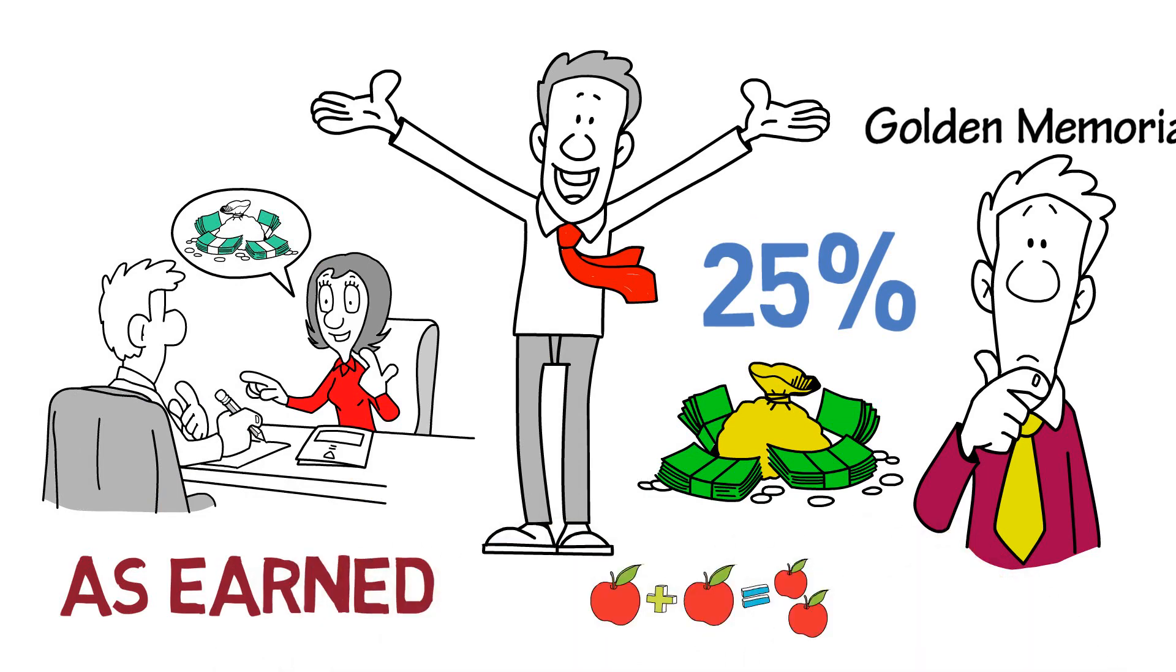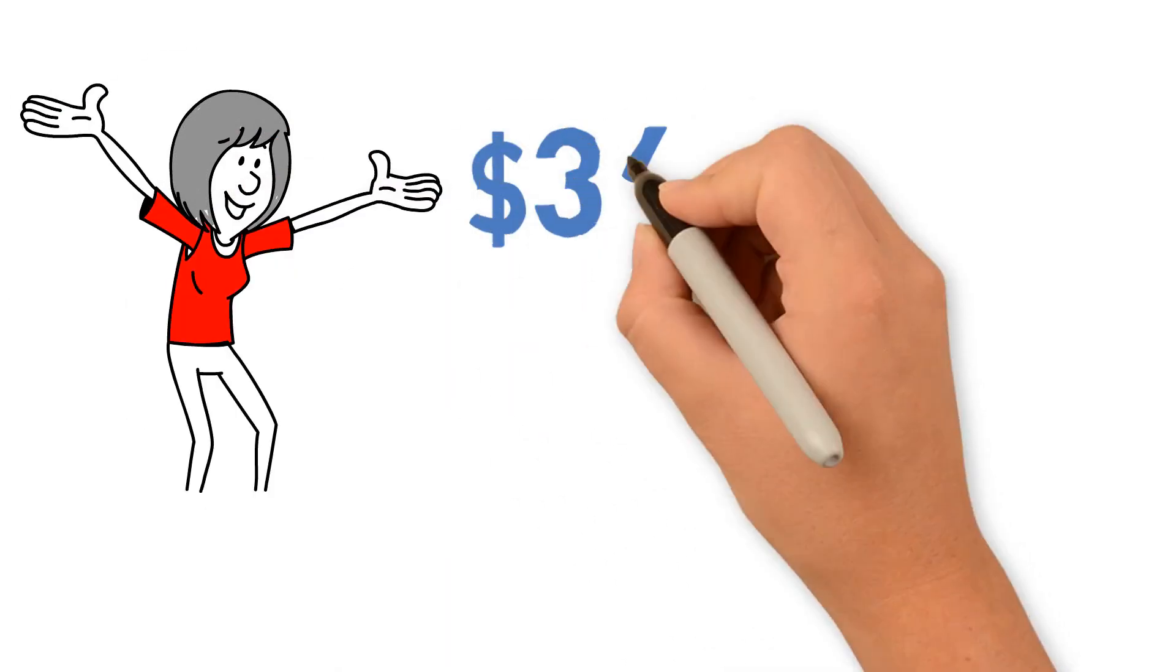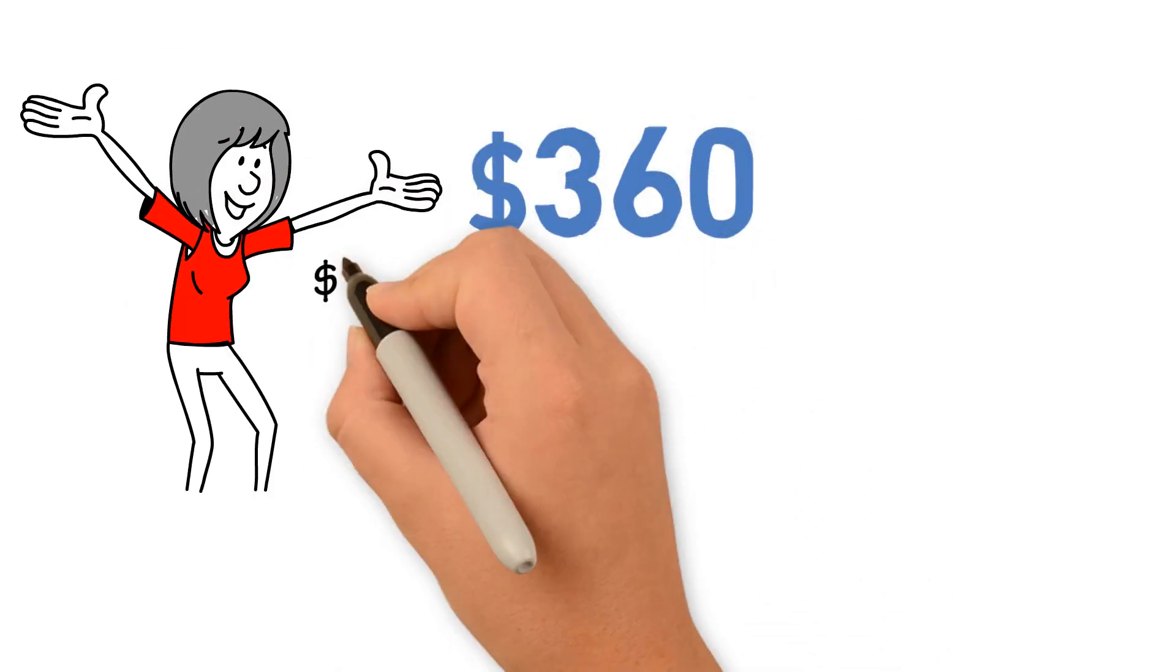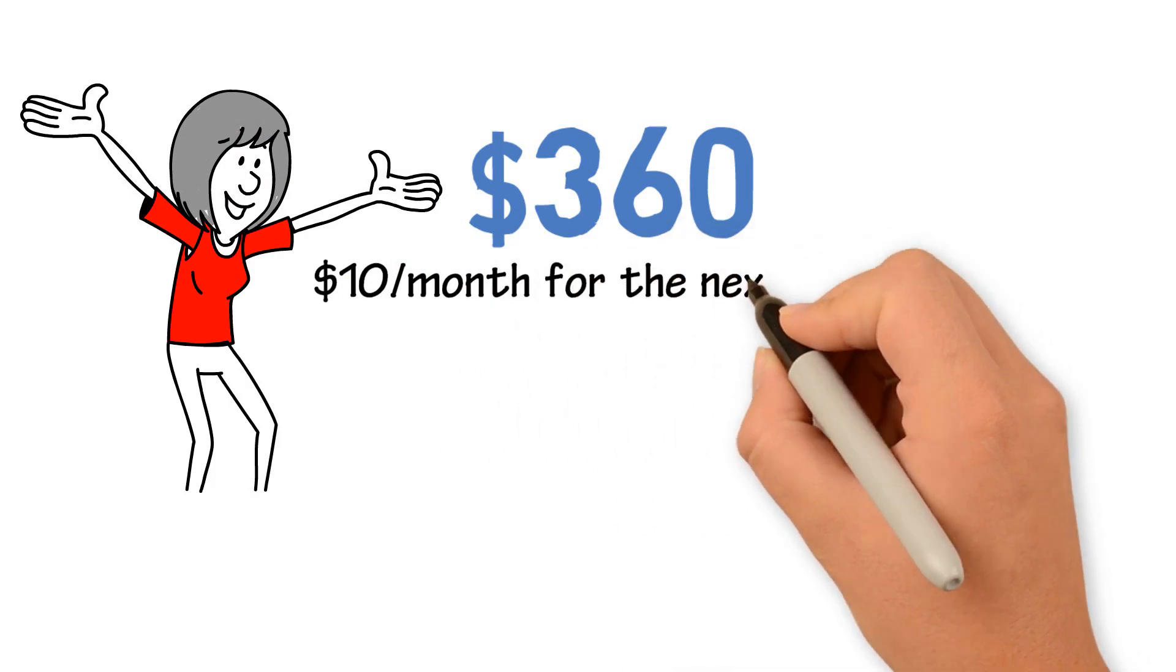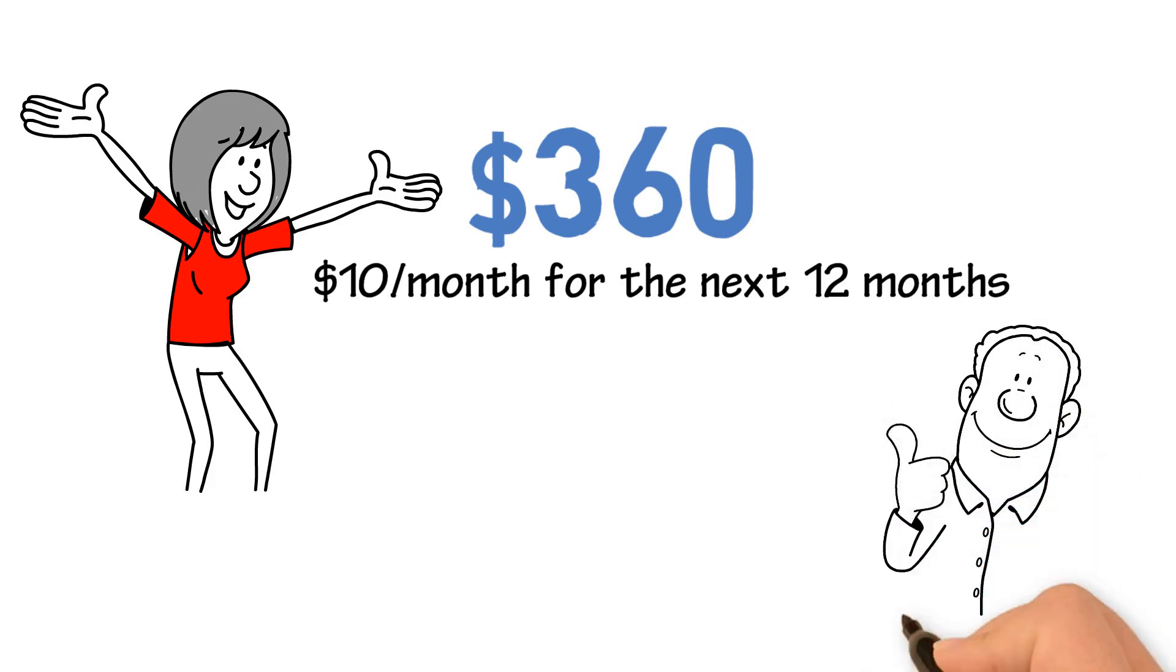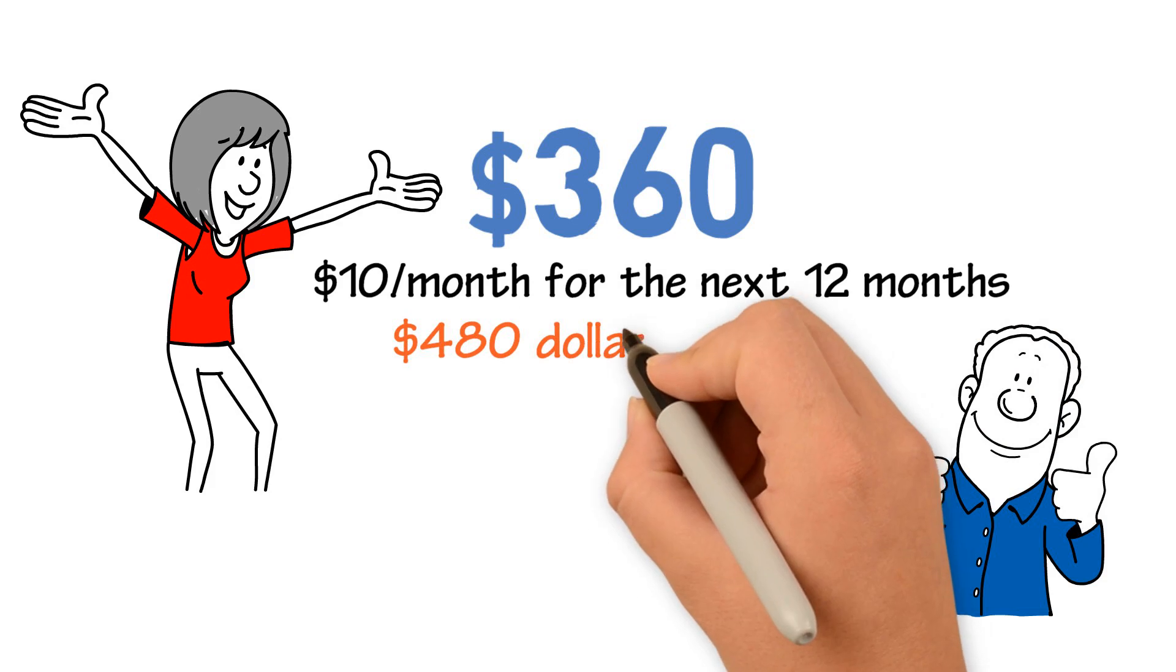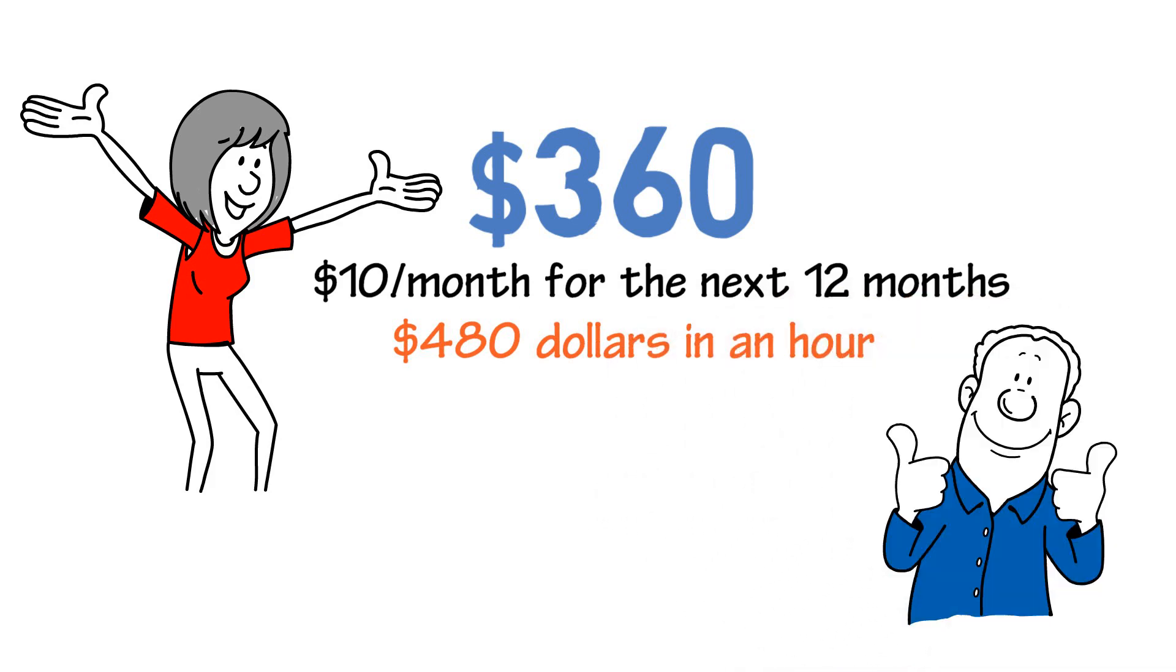So what does all this math mean? It means for this one policy, you'll get $360 deposited into your account, and you'll get $10 a month for the next 12 months, just for this one policy. This job just keeps getting better and better, right? That means in total, you've really made $480 in an hour of your time.